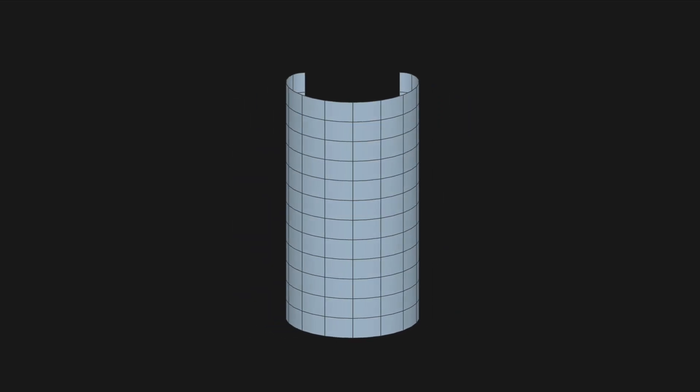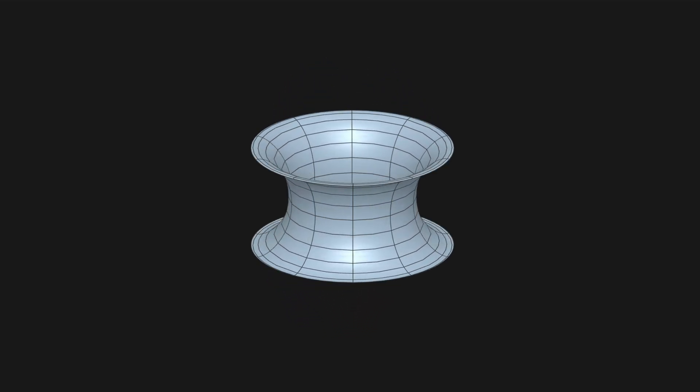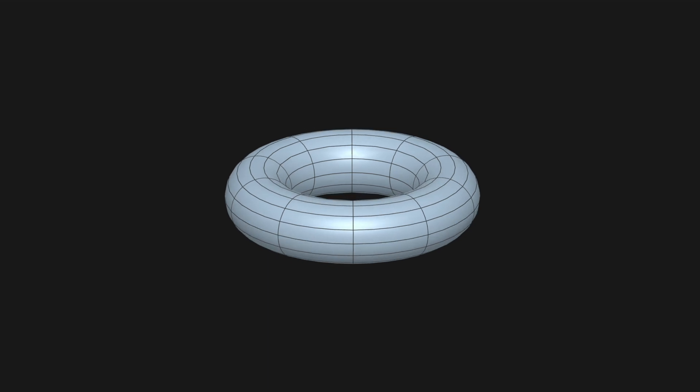So for example to create a torus we can start with a square region of the plane, roll it into a tube and then connect the two ends together.